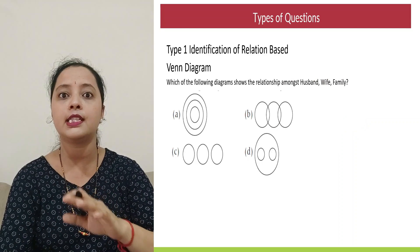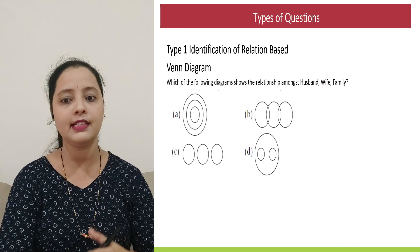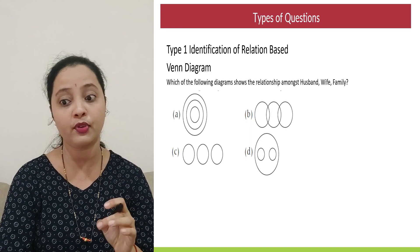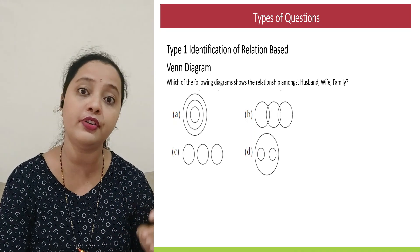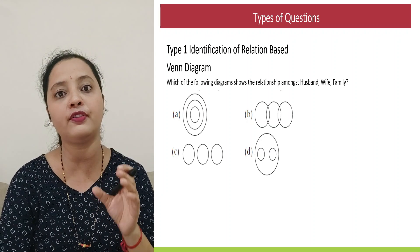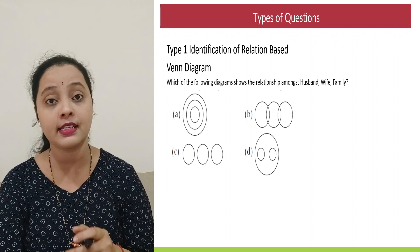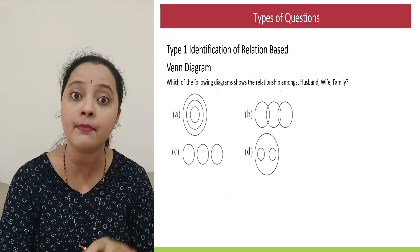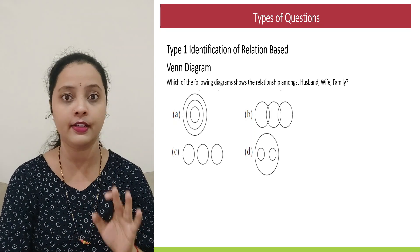So let's start. This is now what you see on the screen is the first variety of question. That is identification of relation based on the Venn Diagram. Now, one important thing before we actually dig in into the question is when you read such question, do not draw your own diagram. It could be for the certain set of elements that they have given multiple diagrams are possible, but they are asking you to select the diagram among the diagrams that are given. So selected from the options that are available.